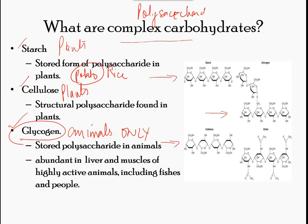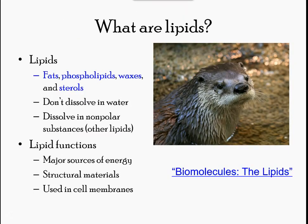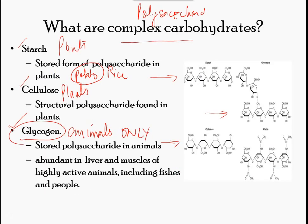Cellulose is one of the most abundant natural biopolymers. The cell walls of plants are mostly made up of cellulose, which provides structural support to the cell. Wood and paper are mostly cellulosic in nature. Cellulose is made up of glucose monomers that are linked by bonds between particular carbon atoms in the glucose chain.